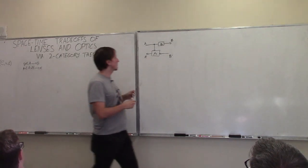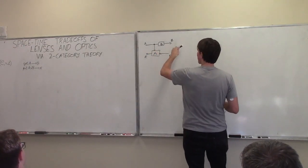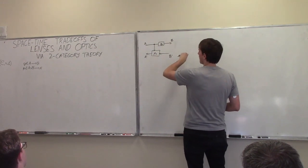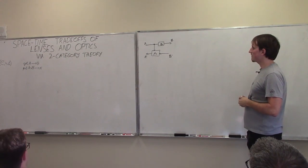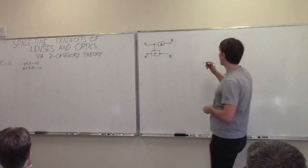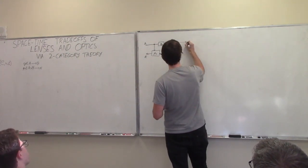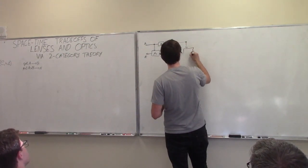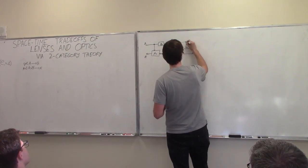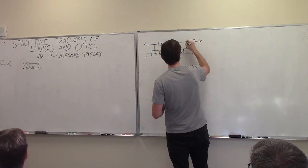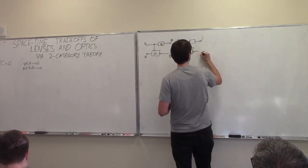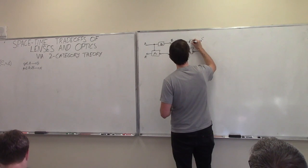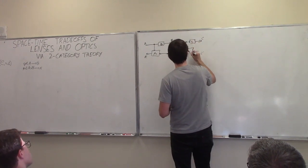We think of a lens like this: we have a forward pass, we do something, we save some state, and then we use it on the backward pass. So I told you this is a category, which means that if I have another lens — this should be B, B-prime, C, C-prime — I'll call this get-two and put-two.